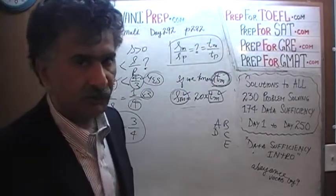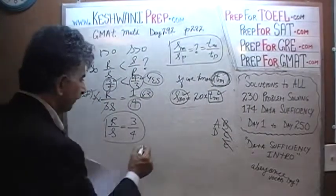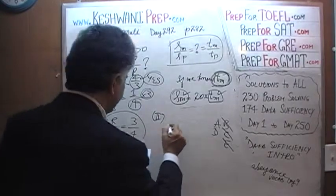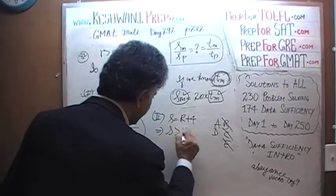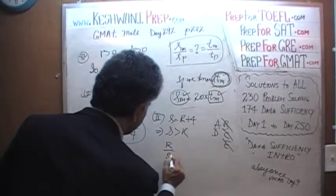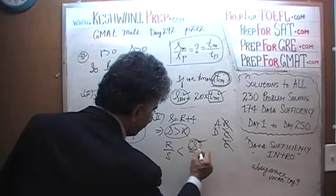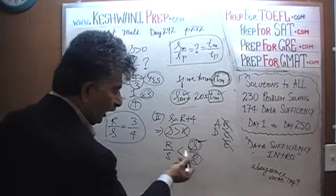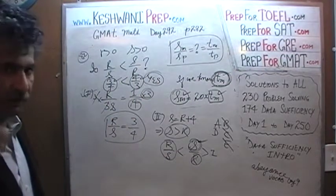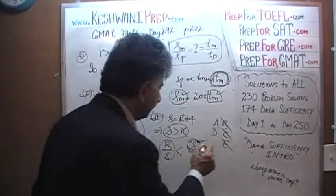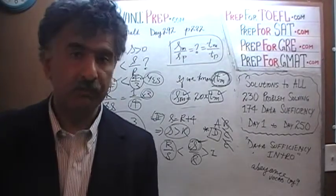Now that we have established Statement 1 is sufficient, the answer cannot be B, C, or E — it has to be either A or D. Statement 2 tells us that S equals R plus 4. That in itself implies S is more than R. If S is greater than R, then R/S is less than 1 and S/R is greater than 1, so R/S is definitively less than S/R. The second statement by itself also does the job. The answer is D.